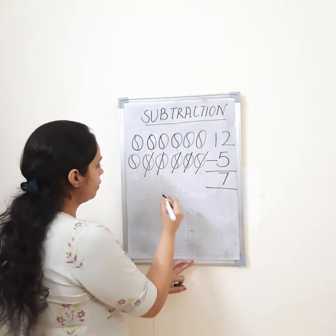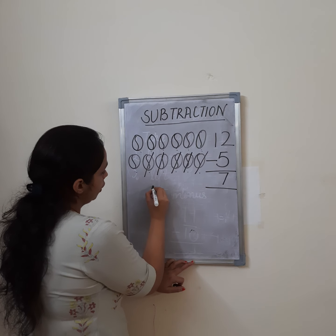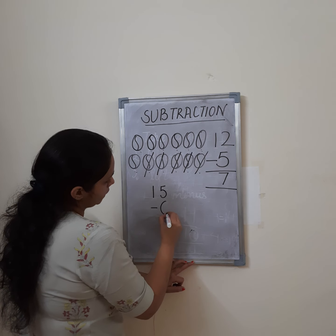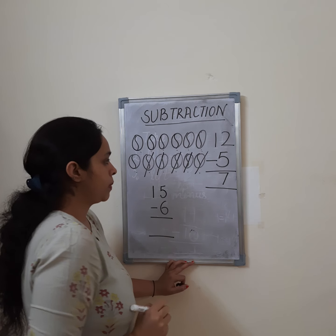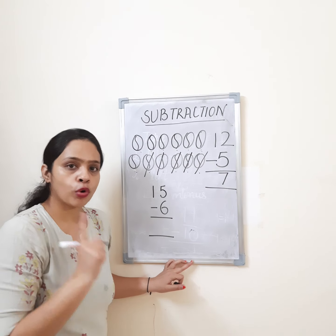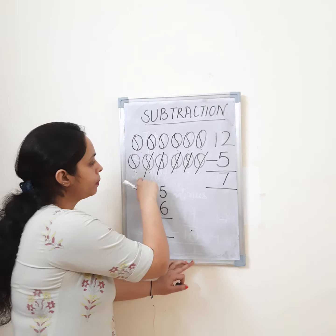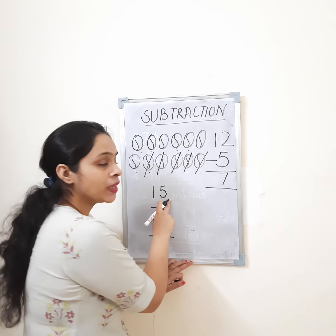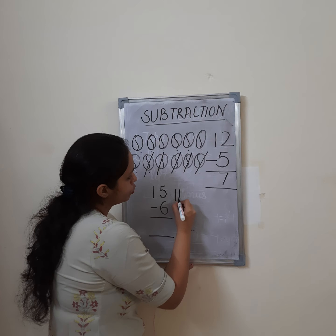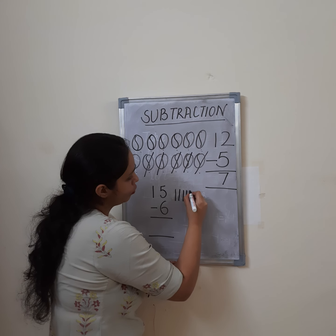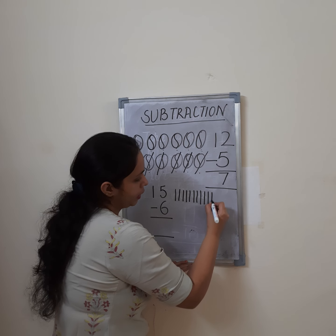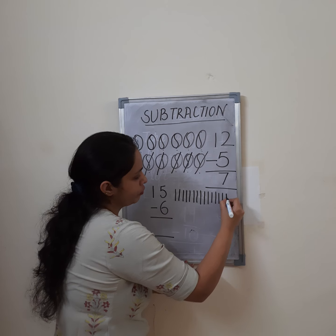Now let's try another type. For example, 15 minus 6. Ma'am will not draw pictures this time. We will do it with the help of crossing out. First we will draw lines — 15 sticks: 1, 2, 3, 4, 5, 6, 7, 8, 9, 10, 11, 12, 13, 14, 15.